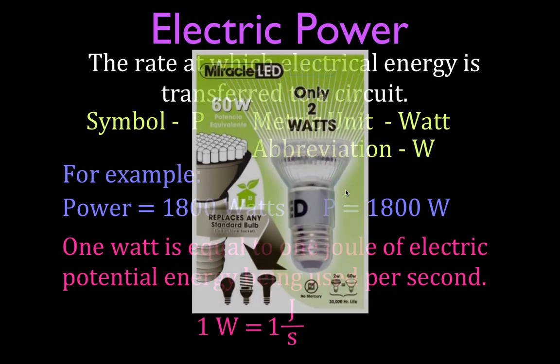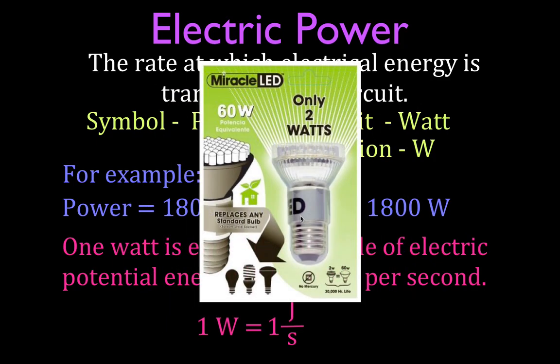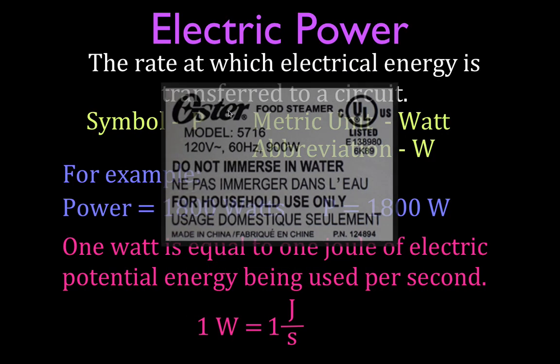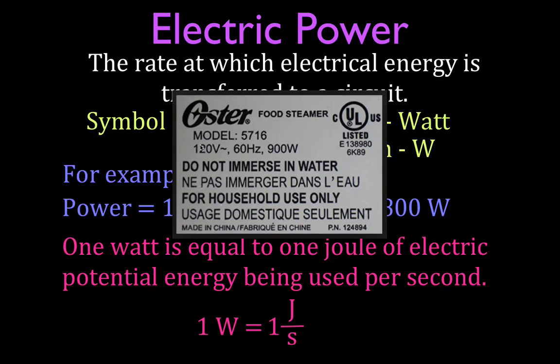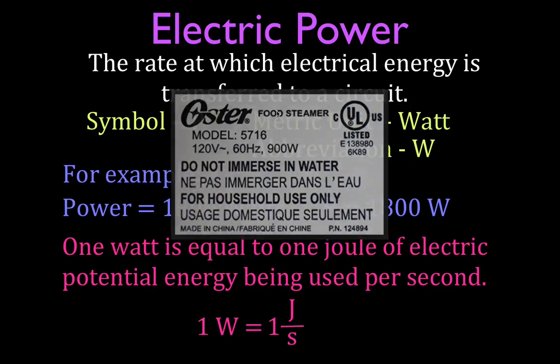You can also see this very commonly in a light bulb, it's a 2 watt light bulb, an LED light bulb. It's using two joules, or converting two joules of electric potential energy per second. This light bulb gives off as much light as a traditional maybe incandescent 60 watt light bulb. The last thing we have here is a food steamer. When you use a 120 volt source, this food steamer will produce 900 watts of power to heat and steam your food, 900 joules of energy. Electric energy is being converted every second.